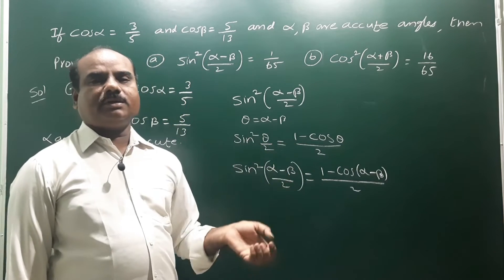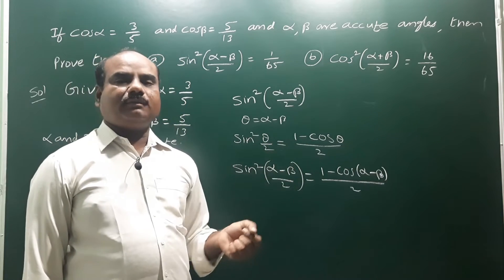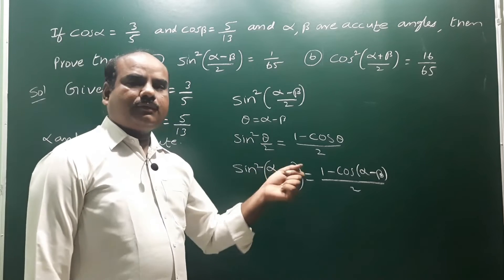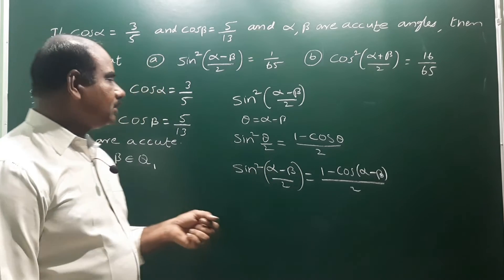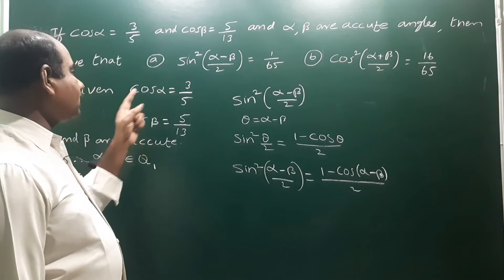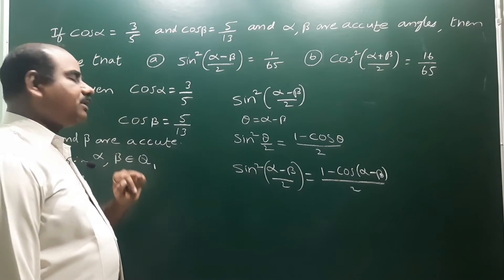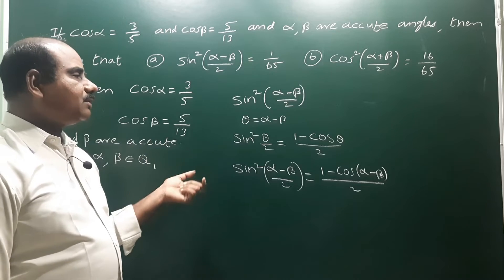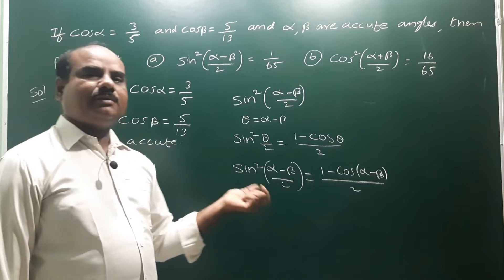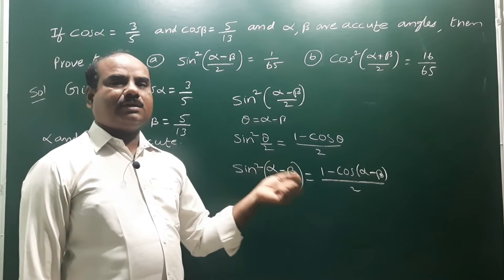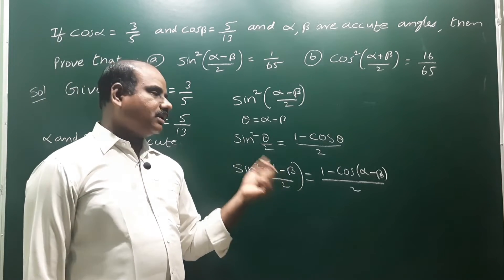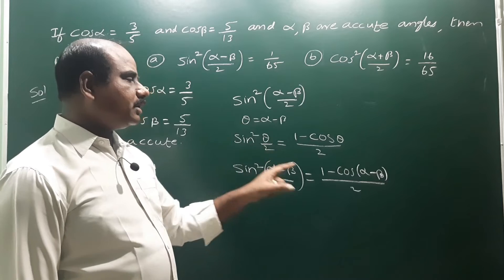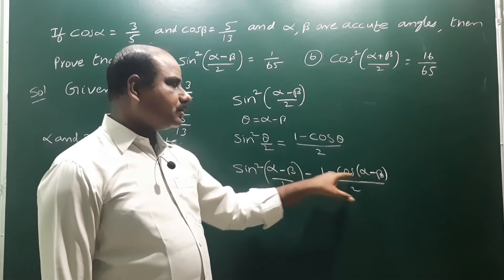Now, cos(α−β) expands using the formula: cos(α−β) = cos α cos β + sin α sin β. We have cos α and cos β, but we need to find sin α and sin β.